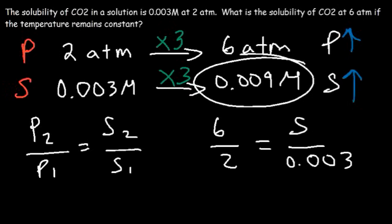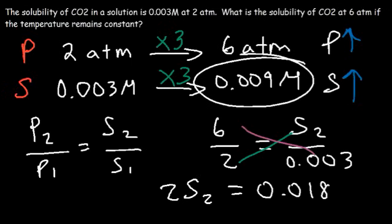Now we're looking for S2, the solubility when the pressure is 6. So to solve for S2, let's cross multiply. Two times S2 is simply 2S2. And 0.003 times 6 is 0.018. Six times three is 18.